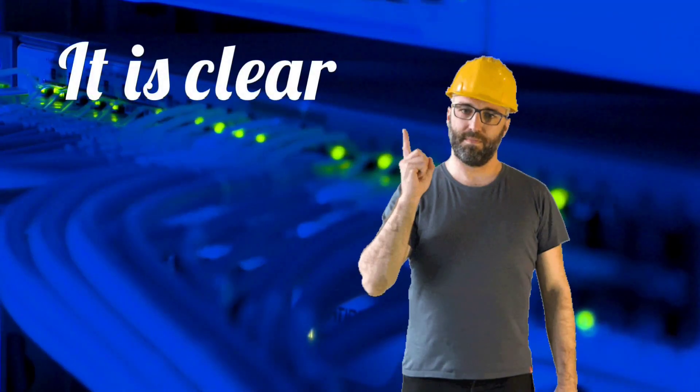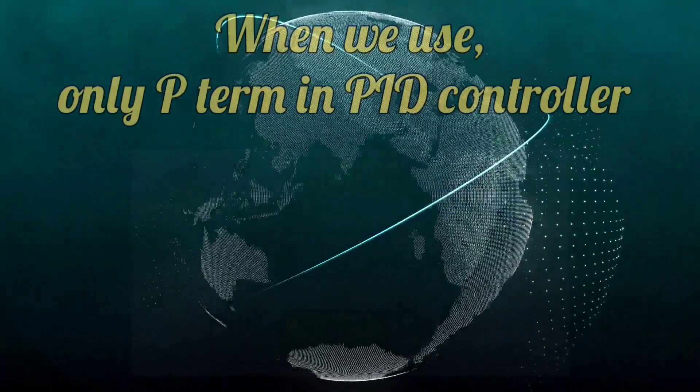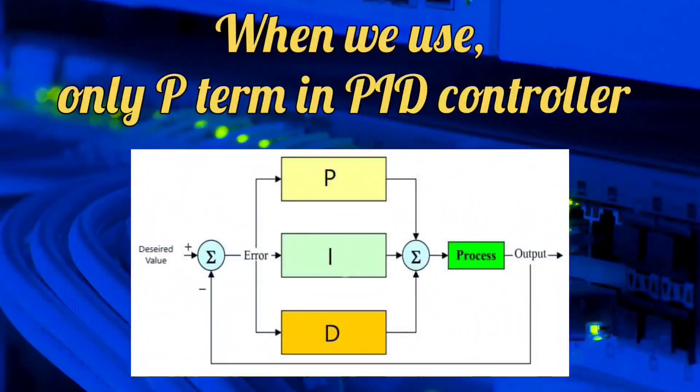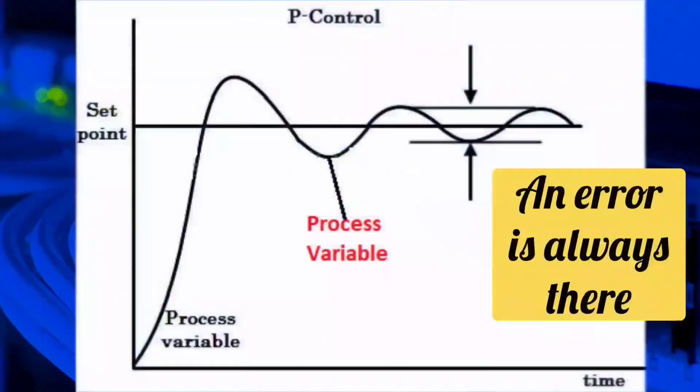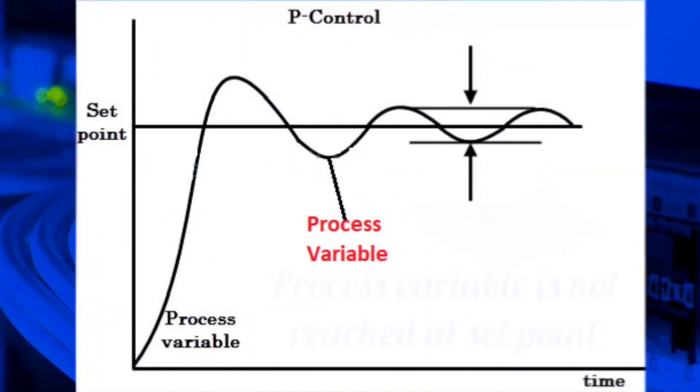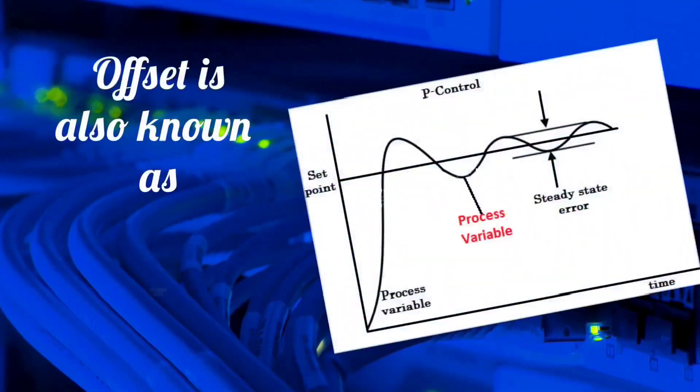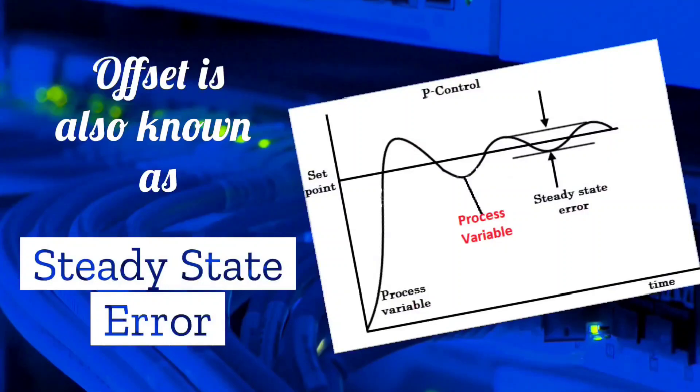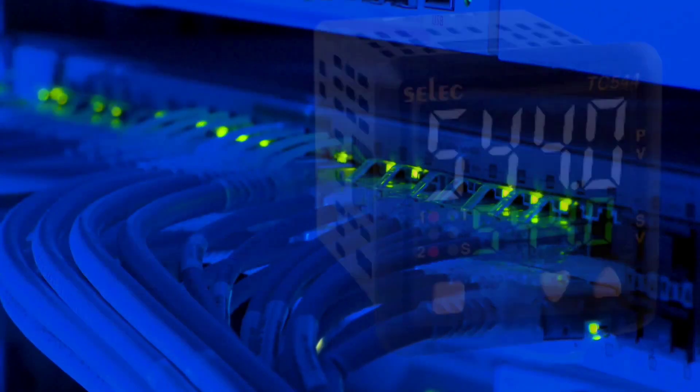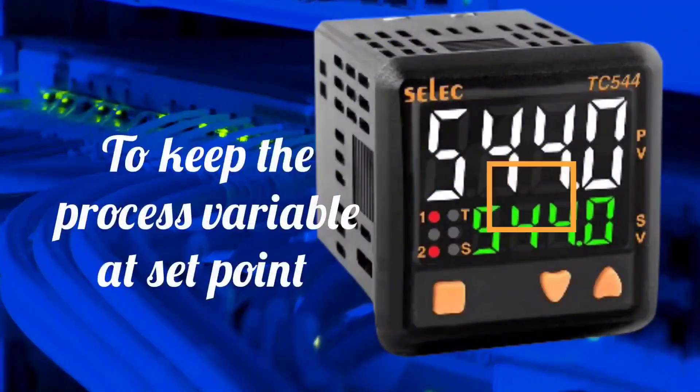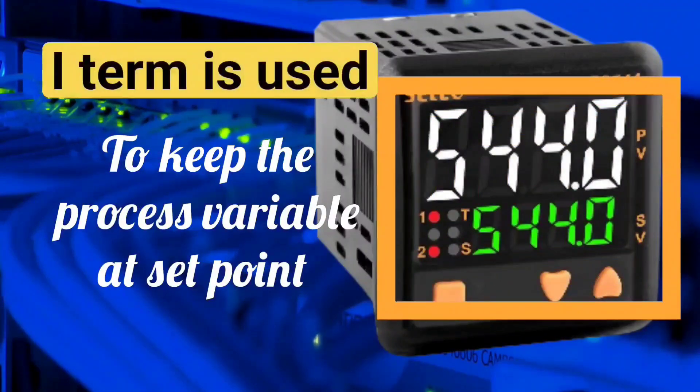One thing is very clear from here. That when we use only P term in PID controller, then an error remains, and the process variable does not reach the set point. Offset is also called steady state error. To bring this error to the set point, I term is used.